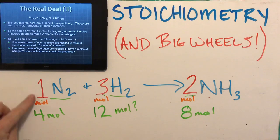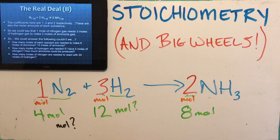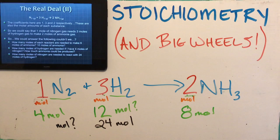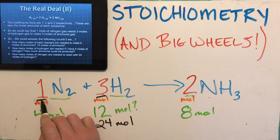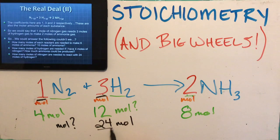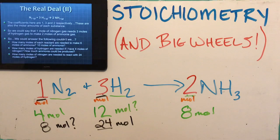Not really hard stuff — simple math. There's a relationship based on the coefficients. The green numbers came from looking at the relationship of these red coefficients in the recipe or the chemical equation. One last one: how many moles of nitrogen are needed to react with 24 moles of hydrogen? If I have 24 moles of H₂, for every three hydrogens I only have one nitrogen — I have one-third of this number. One-third of 24 is 8. Or: 1 times 3 is 3, 8 times 3 is 24 — it works the same way either way.